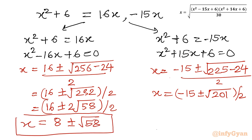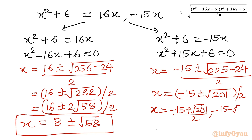Now from equation 2: x = [−15 ± √(225 − 24)] / 2 = (−15 ± √201) / 2. Since √201 is less than 15, both values will have negative magnitude: (−15 + √201)/2 and (−15 − √201)/2 are both negative. So both values are rejected.